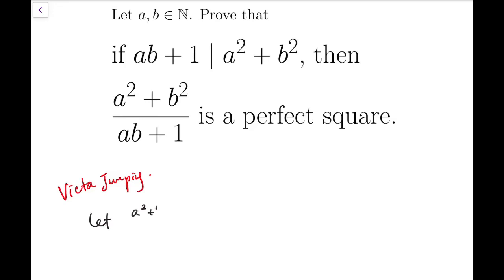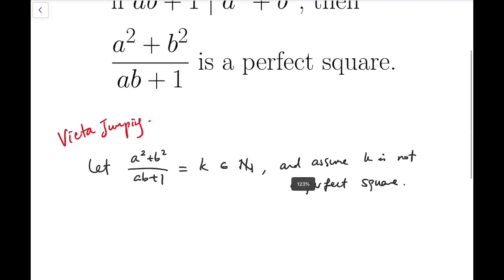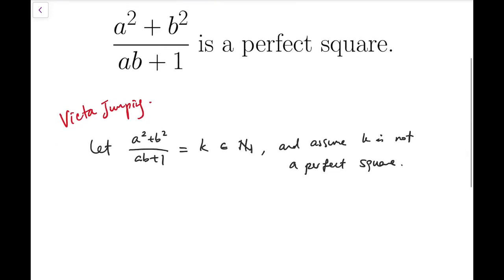So I'm going to start off by letting a squared plus b squared over ab plus 1 equals k, which is some integer, or to be more precise, a natural number from the given condition. And of course, we assume that it's not a perfect square, starting with a proof by contradiction.